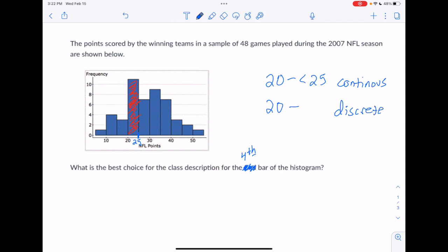So we go back up and look to see what was our variable on this problem. And it's the points scored by the winning teams. So if it's the points scored by the winning teams, that has to be a whole number in almost any sport, and that's definitely true in football.